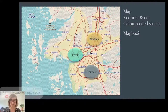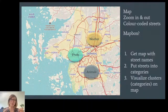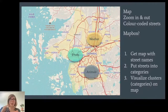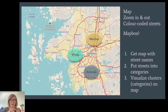My simple workflow was as follows: first, get a map of Gothenburg with information about all its streets and street names. Then go through those street names and put them into categories, and then figure out how to visualize those categories on a map.